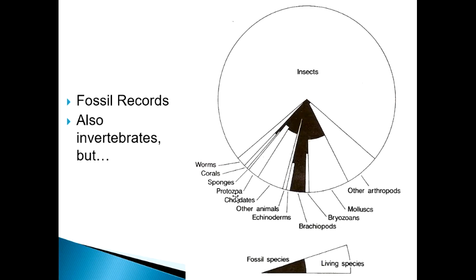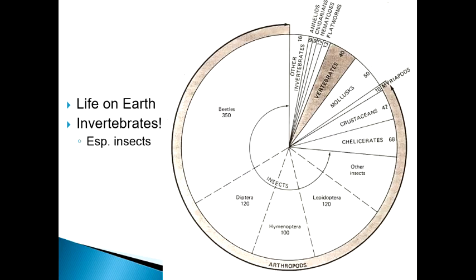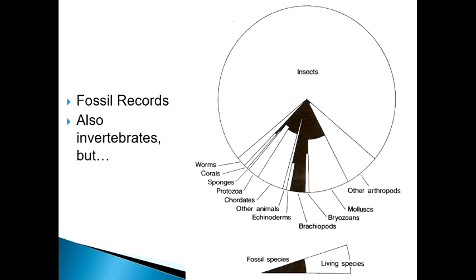Protozoa — these are single-celled creatures — have a good fossil record. Sponges and corals also have a good fossil record. Worms, not so much. So we have these different views of life on the planet: the way that zoologists look at life on planet Earth, and then the way that paleontologists look at it as well. And this is going to guide how we study and what we study in this class.